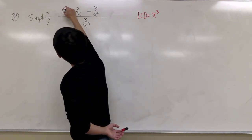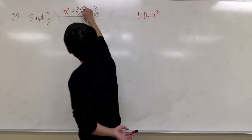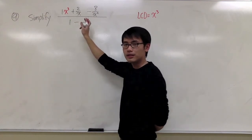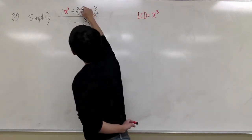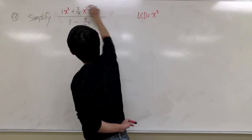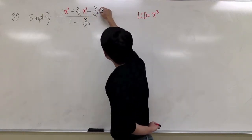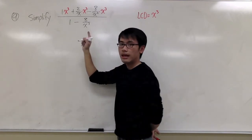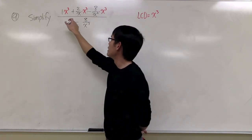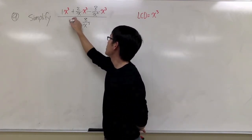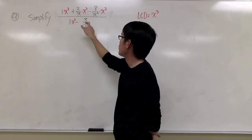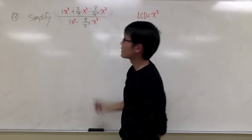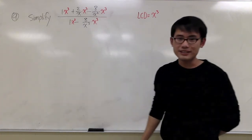So I see 1, I will multiply that with x to the third power. And 2 over x, I will also multiply that with x to the third power. Similarly right here, multiply x to the third power, and on the bottom as well: 1 times x to the third power, minus 8 over x to the third power times x to the third power. So that's the first step.